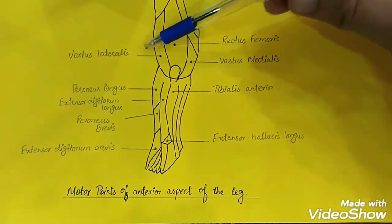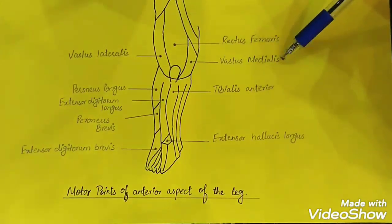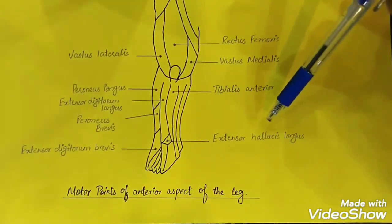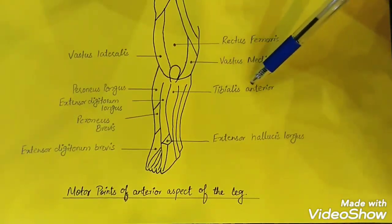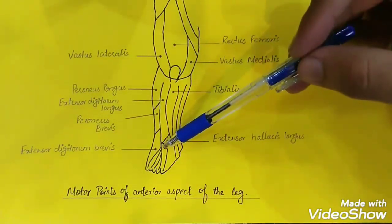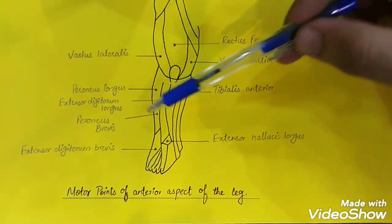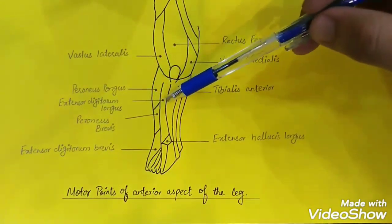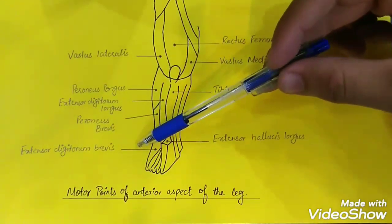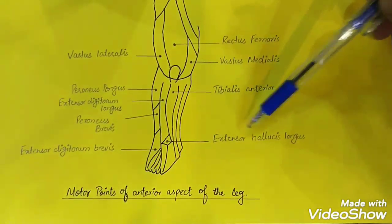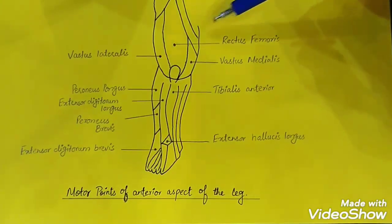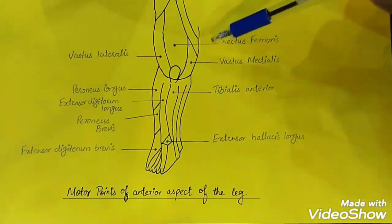Then the vastus lateralis and the vastus medialis. Talking about the leg region, the first motor point is the tibialis anterior. Then there are the lateral motor points: the peroneus longus, extensor digitorum longus, peroneus brevis, extensor digitorum brevis, and extensor hallucis longus. You can see that all these motor points lie in the belly of the muscle.